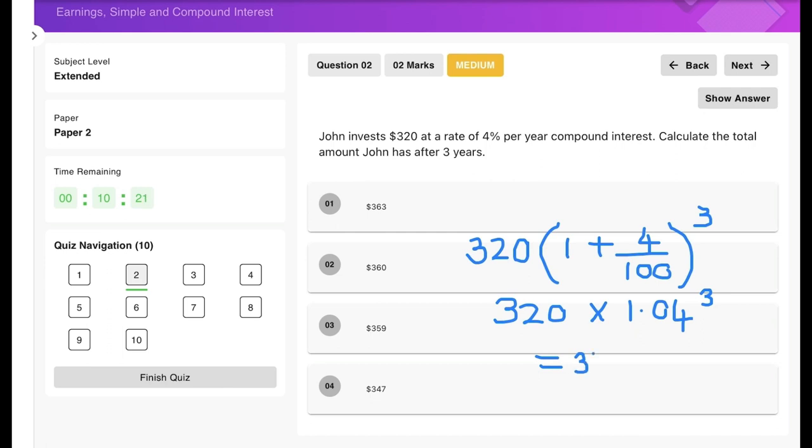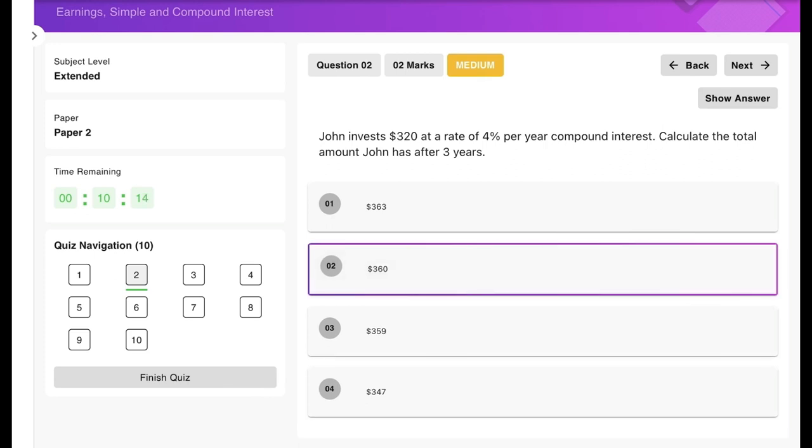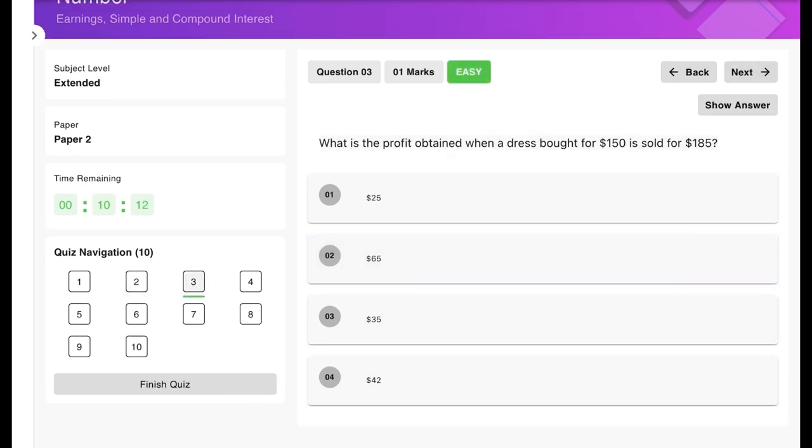Moving on, what is the profit obtained when a dress bought for $150 is sold for $185? So it's a simple matter of subtracting, and we can see that that should be $35 profit.